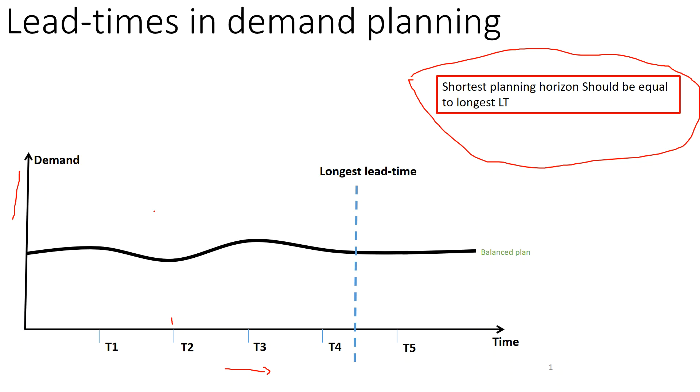Now let's say in practicality how it happens. Let's say this black line is your standard demand and now there is a customer upside. You want to increase the demand. Note that your longest lead time component is this, so your longest lead time is T4. Now you are getting a request for increasing the demand plan in this time horizon.